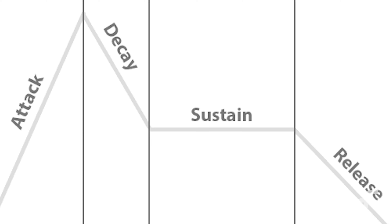In order to explain that, I want to bring back that graph that we've made before. As we can see, the attack rises, the decay fades to the sustain, the sustain holds, and then the release fades to nothing. With a negative envelope, all we have to do is invert this graph and now we have a completely new path of modulation.